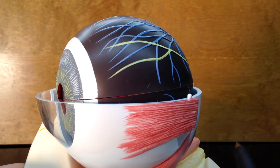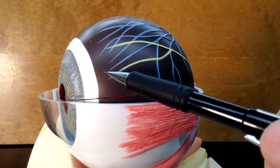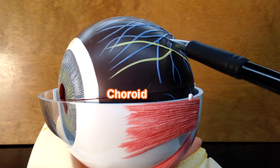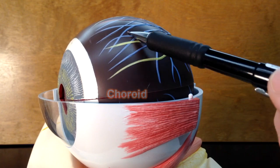From this vantage point, we can also see the choroid layer. The choroid layer is this dark vascular layer. There's a lot of blood vessels in this layer.